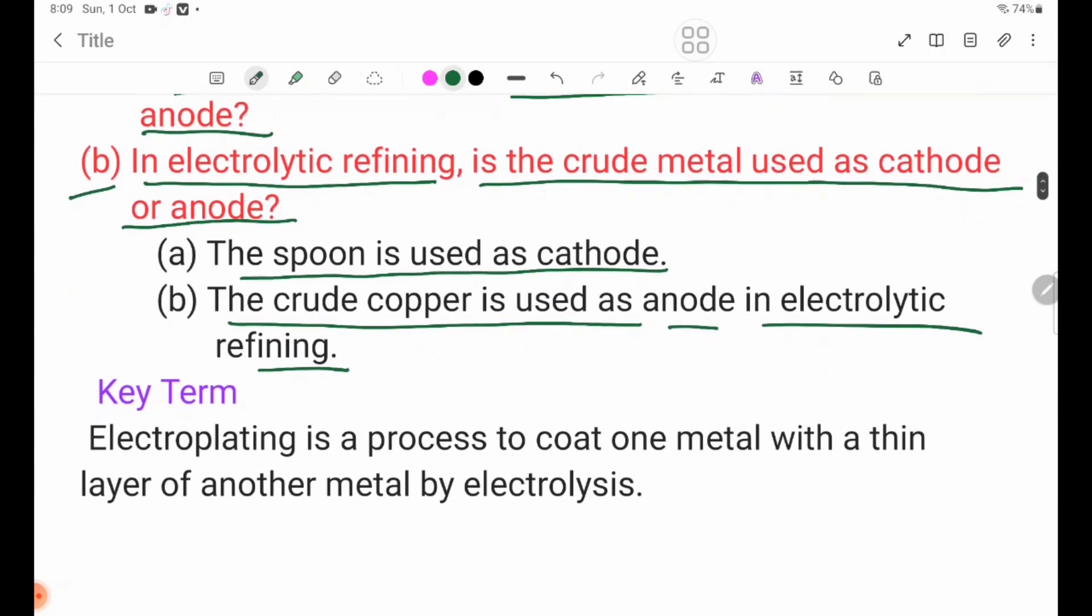At the end, the key term to cover is electroplating. Electroplating is a process to coat one metal with a thin layer of another metal by electrolysis.